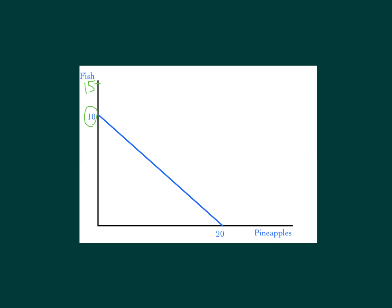That doesn't mean anything happened to pineapples — just his ability to produce fish has gone up. What happens is the line would shift like this: it still connects at 20 pineapples but has shifted out to 15 on the fish axis. You get a rotation around the pineapple number of 20 — just one axis shifts. When you see a PPF that has done that, it tells you something has happened to affect the production of fish and only fish.